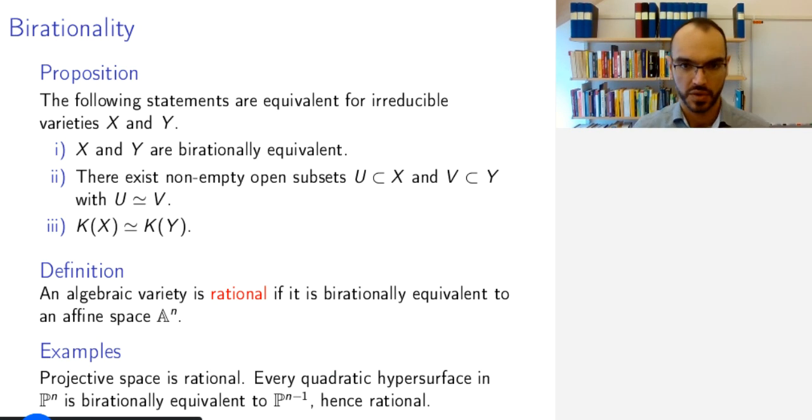And one can show that every quadratic hypersurface in P^n is birationally equivalent to P^{n-1} and therefore it is going to be rational. In other words, for better or for worse birational maps give you more freedom in considering algebraic varieties as similar and we will use this in the future to deal with singularities.